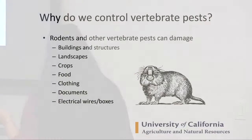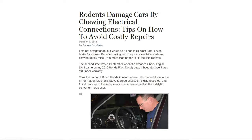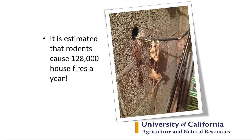Why do we control vertebrate pests? Rodents and other vertebrate pests cause damage to landscapes, crops, food, clothing — they chew up documents and electrical wires. New Honda vehicles have soy-coated wires, and rats are chewing through them — there are lawsuits about this. Rodents cause 128,000 fires per year, fires we could potentially prevent by keeping rodents out of our homes.